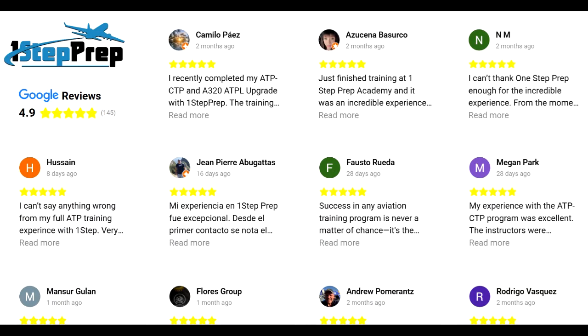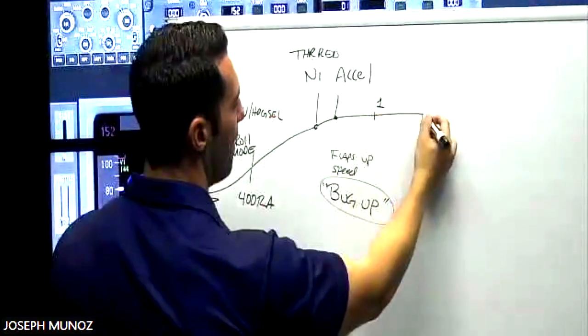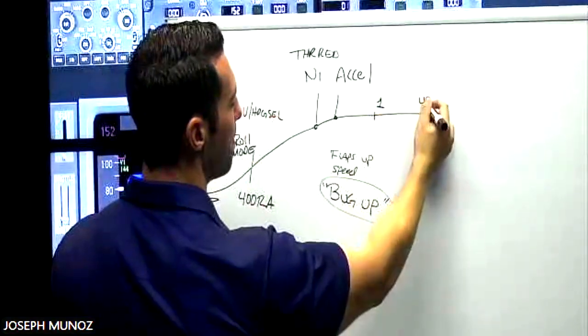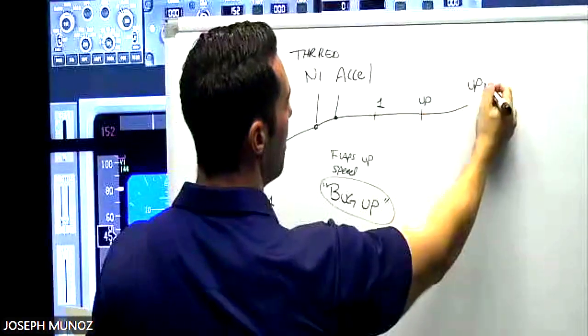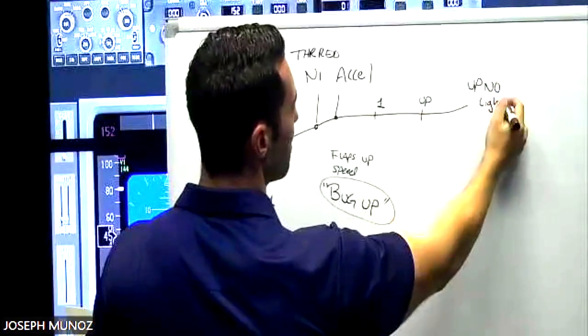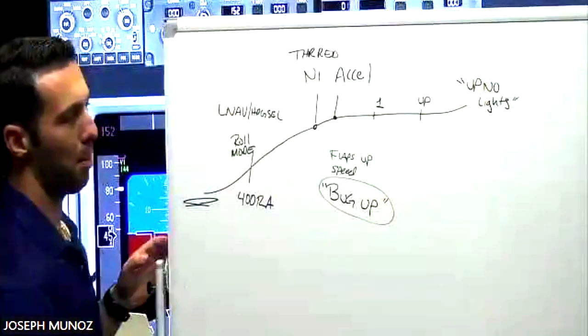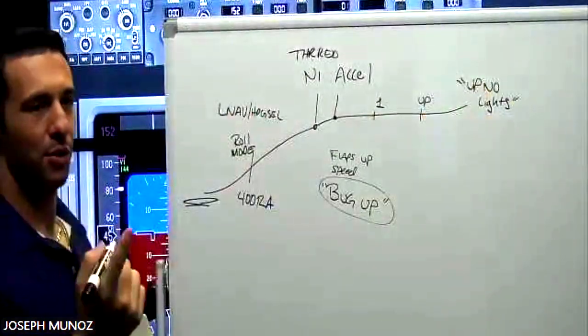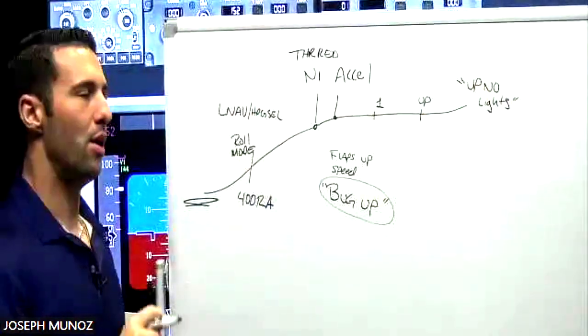So then you're going to go from flaps five to flaps one, and then from flaps one to flaps up. And then when the flaps are up, no lights. Remember from yesterday, no lights means no amber in transit lights. Flaps up no lights, after takeoff checklist.